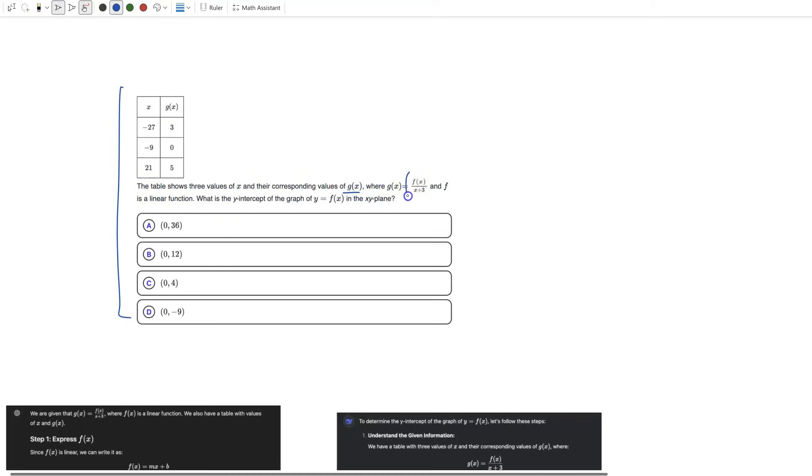The table shows three values of x and the corresponding values of g of x, where g of x is that function and f of x is a linear function. What is the y-intercept of the graph of y equals f of x in the xy plane?